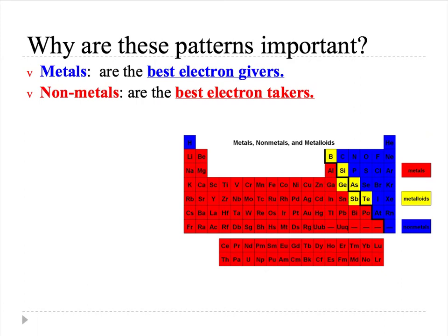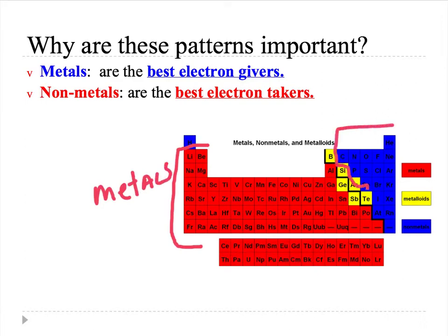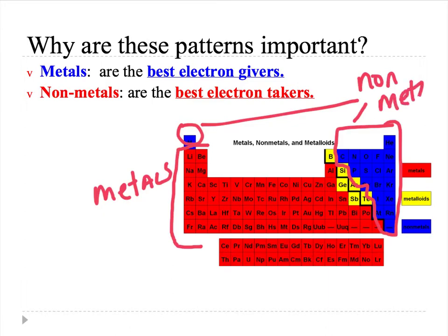So why are these patterns important? We wanted to see how electrons behave. The ones that are metals — shown here in red — are the best electron givers. The ones in blue are the non-metals, and the non-metals are the best electron takers; they will accept an electron to become more stable.